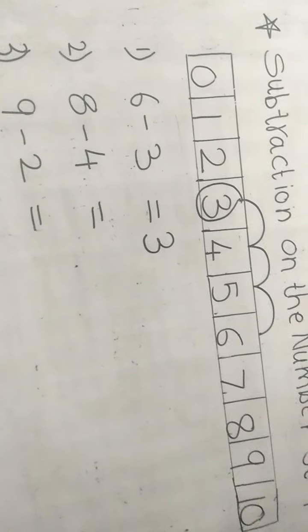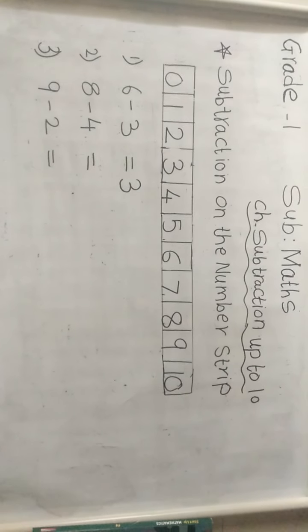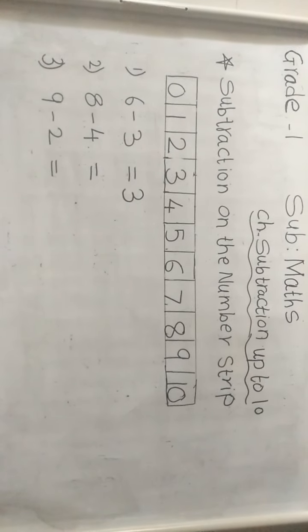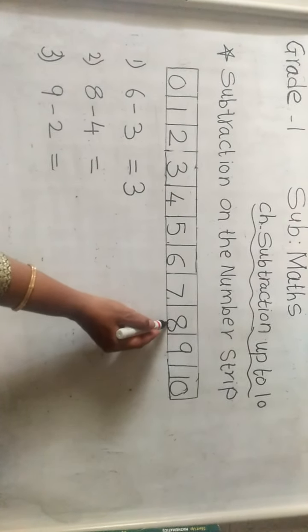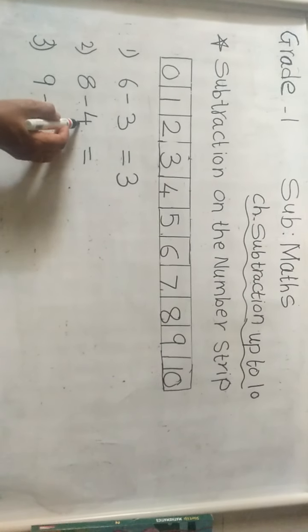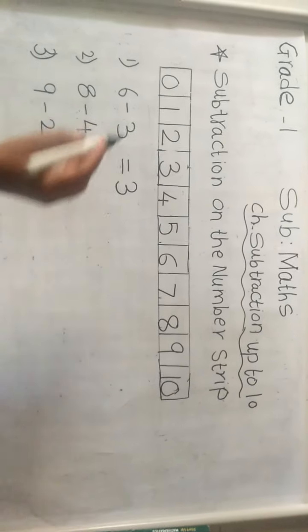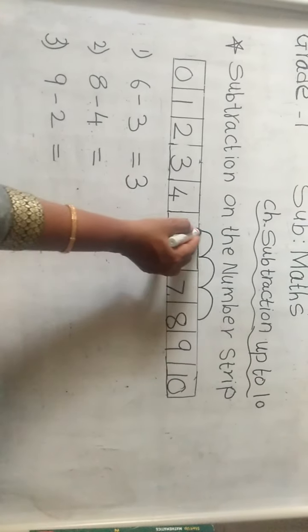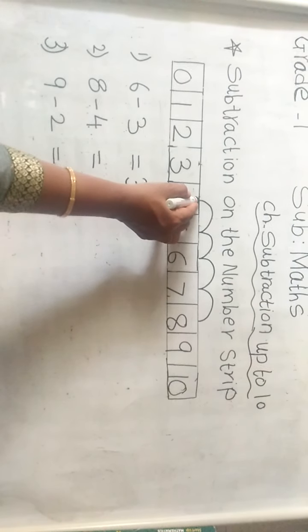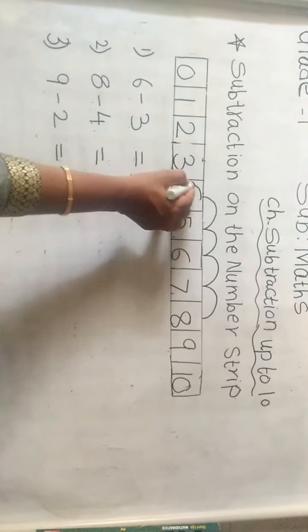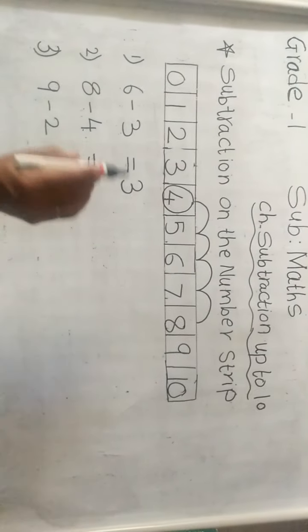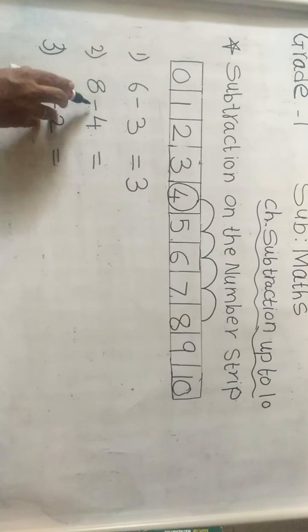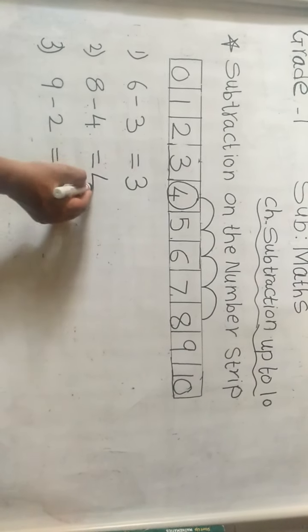Now here is example 8 minus 4. Let's do this example. Search number 8 on the number strip. Here is number 8. 8 minus 4 means we have to go 4 steps backward. Start from here: 1, 2, 3 and 4. Where do we reach? Here is number 4. So our answer is 8 minus 4 is equal to 4.